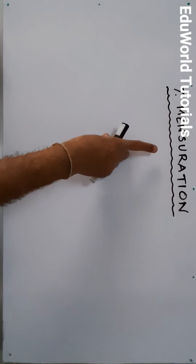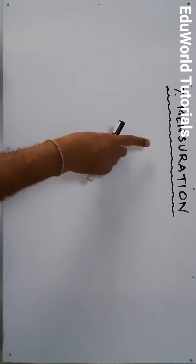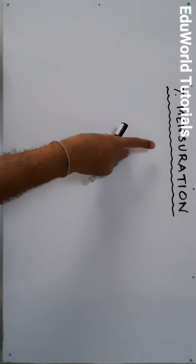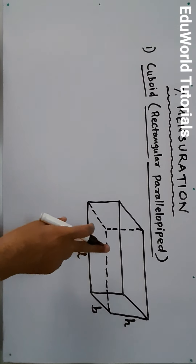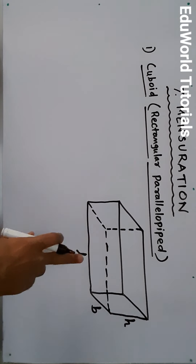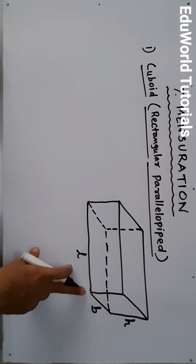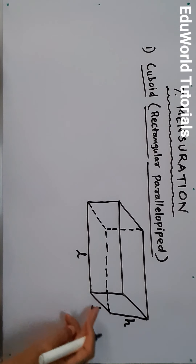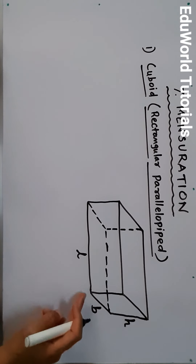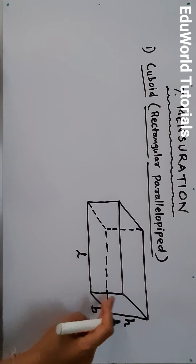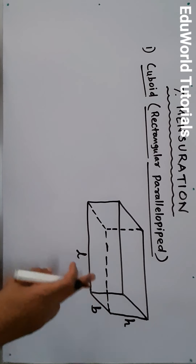I am drawing various solid figures. Solid figures means three-dimensional figures and plane figures means two-dimensional figures. The first figure is cuboid, which is a three-dimensional figure — also called a rectangular parallelepiped. It has three dimensions: the longest side is the length, the other side adjacent to it is the breadth, and height is the third dimension.